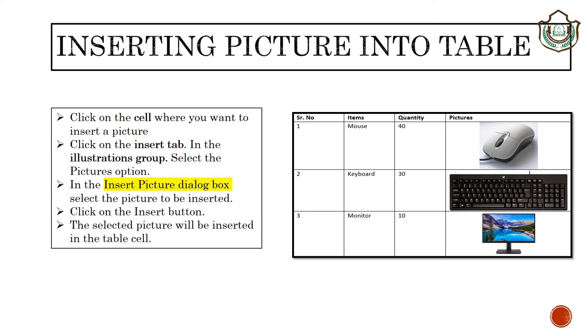Students, we can insert pictures into our table. For this, we need to click on the cell where we want to insert picture. Then click on insert tab in the illustration group. Then in the insert picture dialog box, select the picture to be inserted. Then just click on the insert button. The selected picture will be inserted in your table cell.